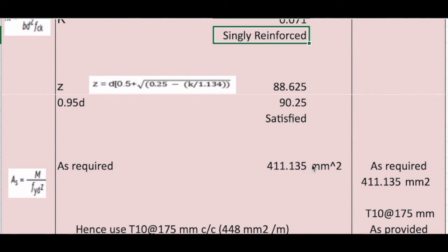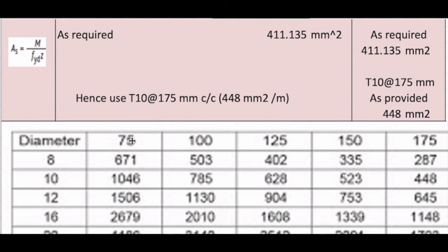This is the As required. So what we have to do is get the table. In the table, 10 mm bar we use. The As required is 411.135. So for 10 mm bar, As has to be 411.135.